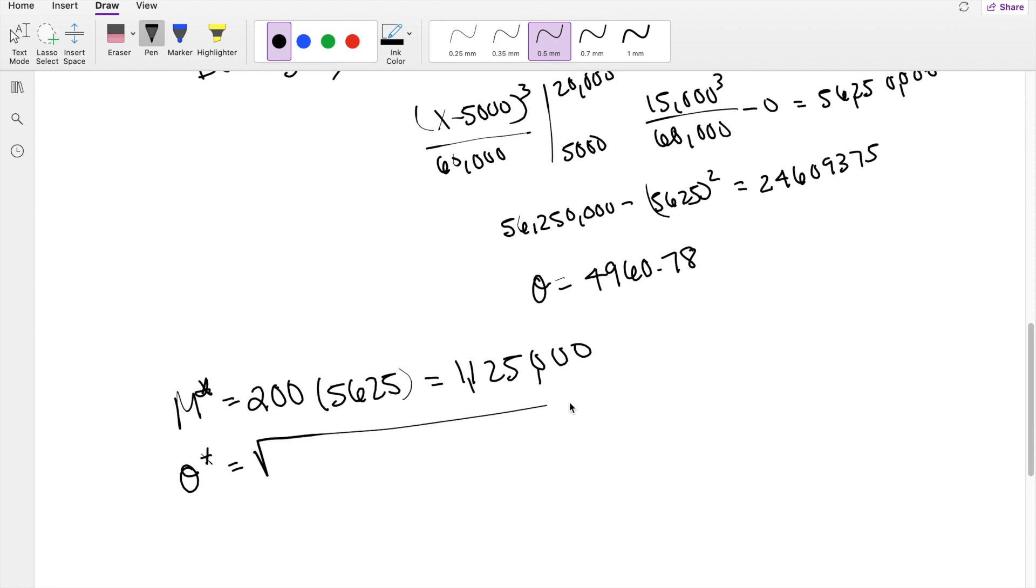Standard deviation is the same idea. We have to bring it back to variance, 4,960.78 squared. But you're adding it 200 times. So that's 4,960.78 squared times 200, which after taking the square root is approximately equal to 70,156.076.